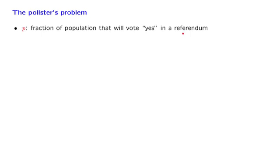There's a certain referendum that's going to take place. We're close enough to the day of the referendum so that voters have made up their minds. And there's a fraction p of the population that represents the voters that are going to vote yes. But the referendum has not yet taken place, and you want to find out to predict or estimate what p actually is.